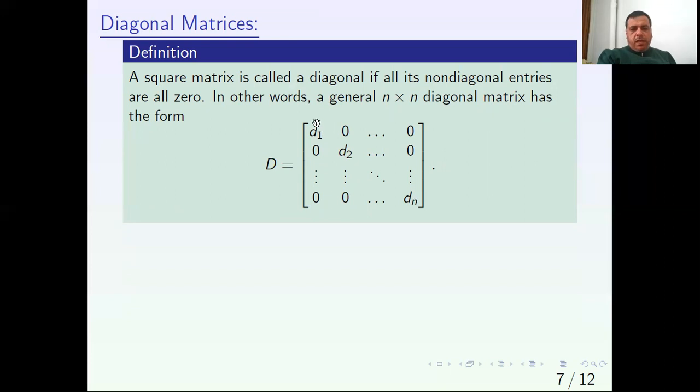Now maybe at least one of these elements in the main diagonal can be zero. For example, a diagonal matrix would be the zero matrix. Any zero matrix is a diagonal matrix.